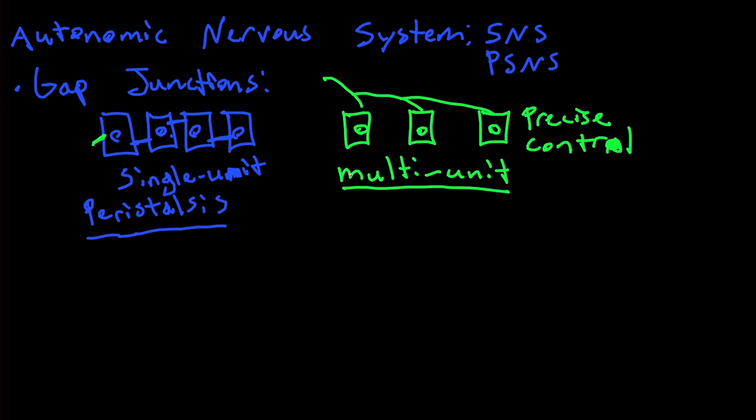A good example of multi-unit is in the iris. Peristalsis is in the GI tract, in veins, and in a ton of other places.